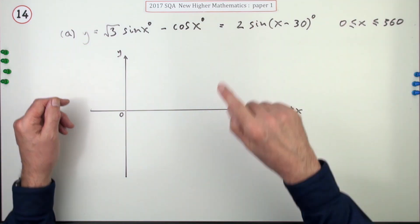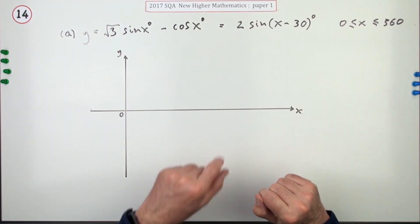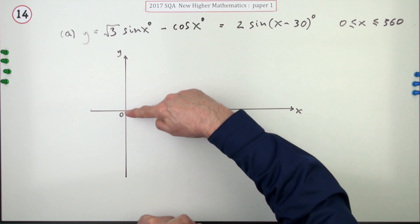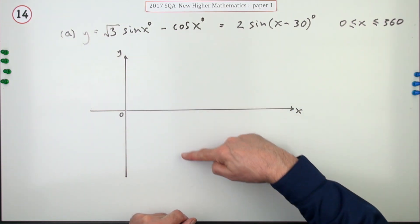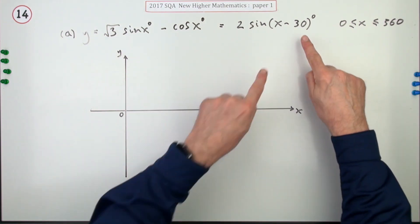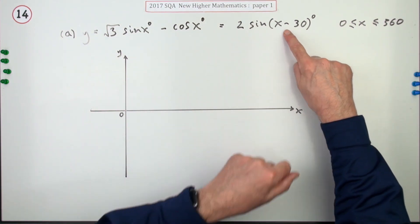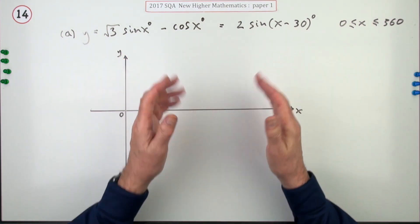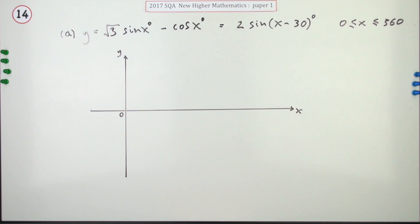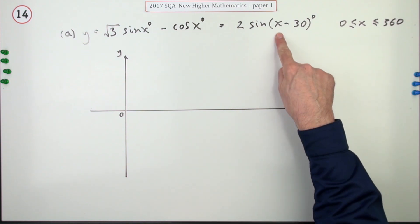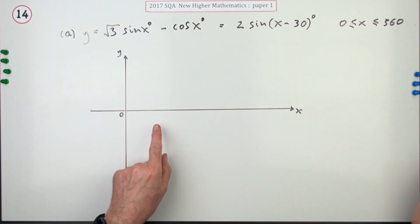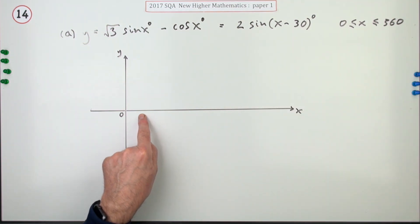The amplitude is 2, so instead of going up 1 and down 1, it goes up 2 and down 2. A phase shift of minus 30 means the graph is shifted forward by 30 degrees. The simplest way to draw that is to draw a sine graph starting at 30.